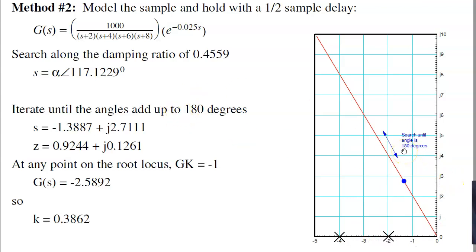A second way to do it is to not do the s to z conversion and just say I've got my plant, g of s. I've got the sample and hold, half sample delay. I'm sampling at 50 milliseconds, so add a 25 millisecond delay, times k. In this case, k is just 1. It's a proportional compensator.